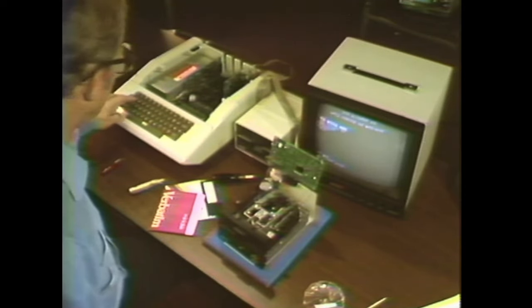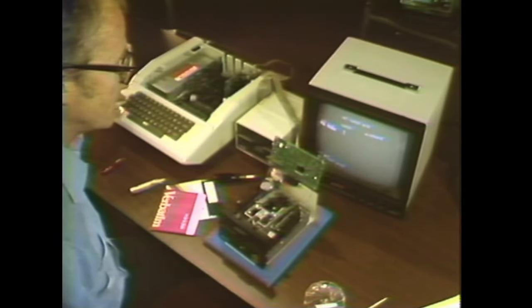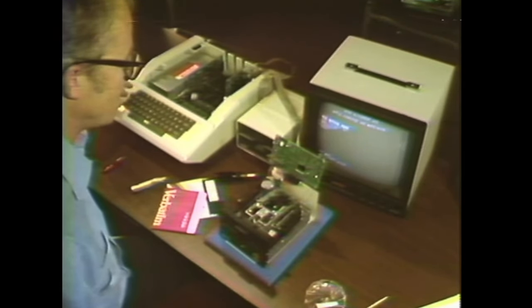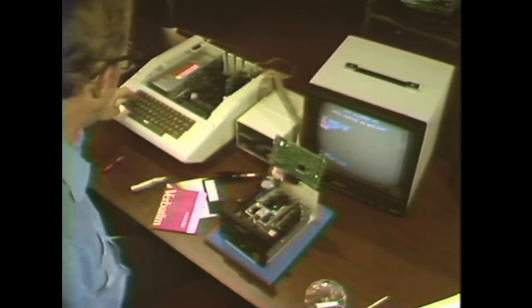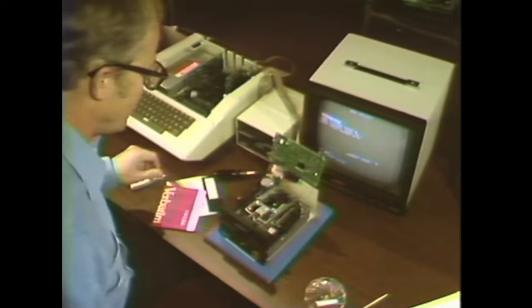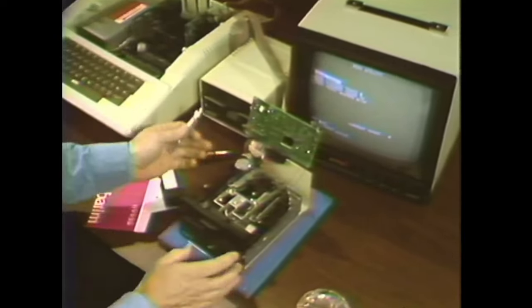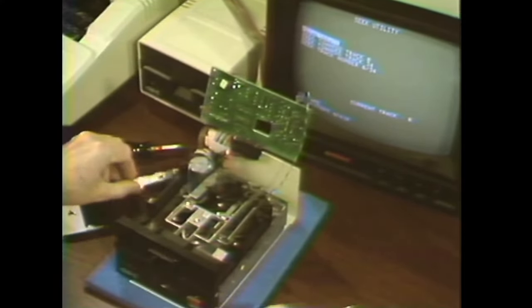I want to accept 'set target disk' and I want to set it for slot six, drive two. Press escape, and now I will select 'seek' and accept that and hear the disk drive calibrate.